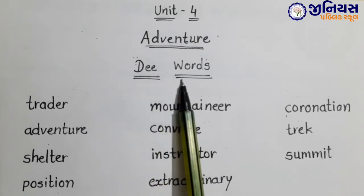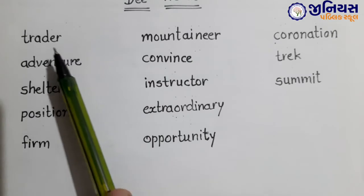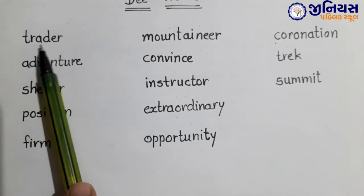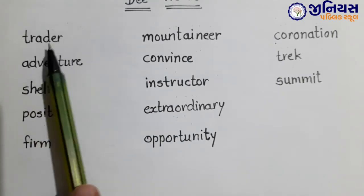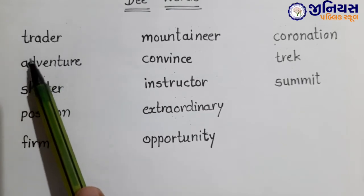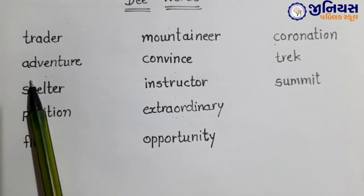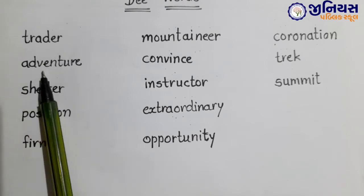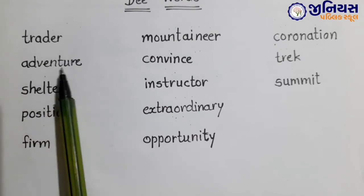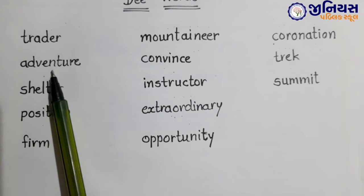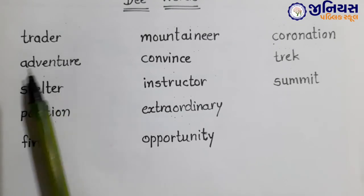Let's learn the D-words of this unit. First one: trader. T-R-A-D-E-R. Trader. Trader means vyapari. Second one: adventure. A-D-V-E-N-T-U-R-E. Adventure. Adventure means sahasik.